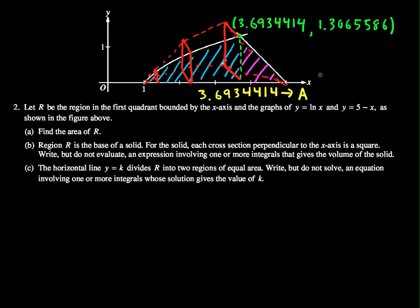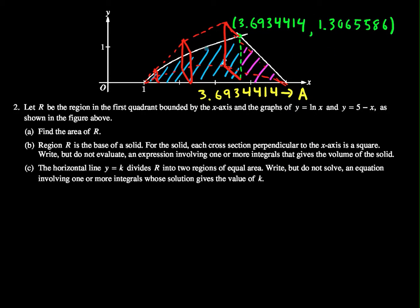What I know of these squares right off the bat is that the area of any of the squares with respect to its side length s is s squared. I also know that in this blue region right here, the side length here is determined by this height, which is natural log of x. So area one in terms of x is the natural log of x squared.